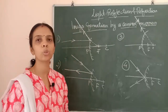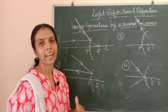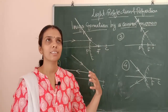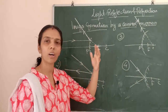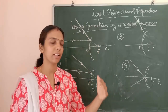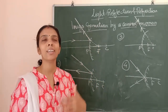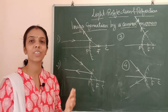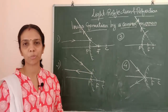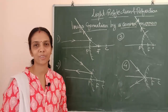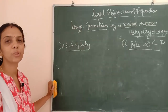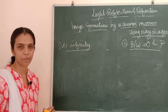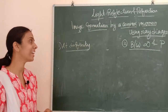Now we are going to draw the ray diagrams for this convex mirror at different positions. Same as what we did for the concave mirror, but there are only two diagrams here — at infinity and between infinity and the pole.